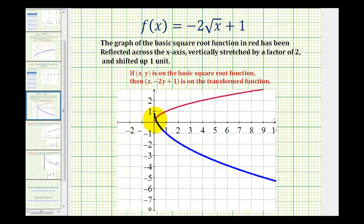So looking at the basic square root function in red and our given function in blue, the blue function has been reflected across the x-axis, stretched vertically by a factor of two, and then shifted up one unit based upon the basic square root function in red.